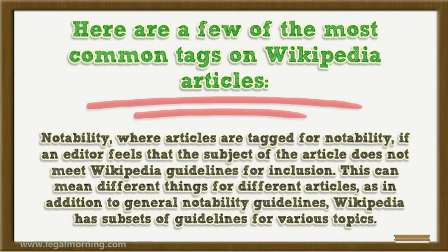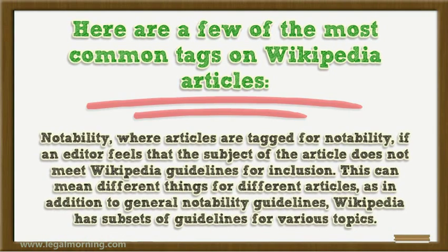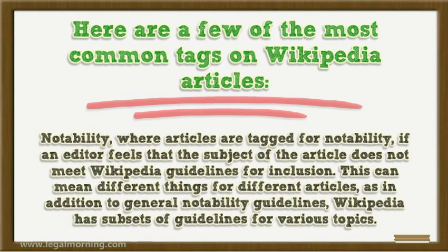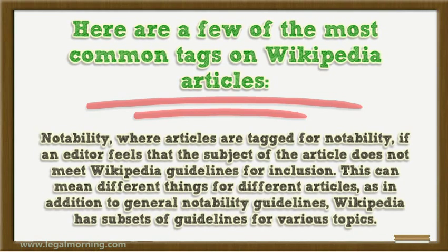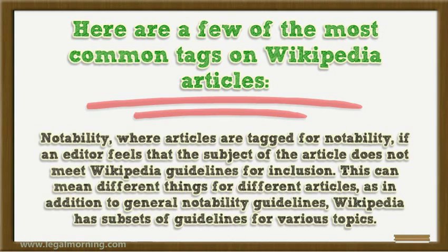Notability: articles are tagged for notability if an editor feels that the subject of the article does not meet Wikipedia guidelines for inclusion. This can mean different things for different articles, as in addition to general notability guidelines, Wikipedia has subsets of guidelines for various topics.